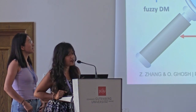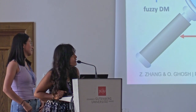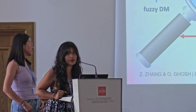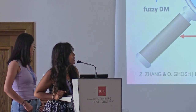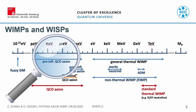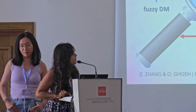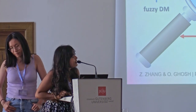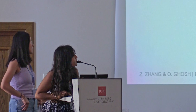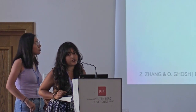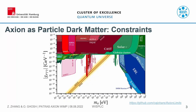Dark matter particle candidates range from a very small mass range, as in fuzzy dark matter, to heavy WIMPs. WISPEL-C will actually look for axion-like particles which fall in roughly this mass range.